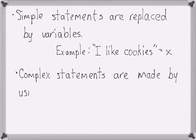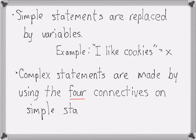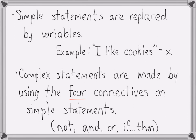Complex statements are made by using the four connectives on those simple statements. There are only and exactly four connectives. They are not, and, or, and the last one is if-then. That's a single connective.